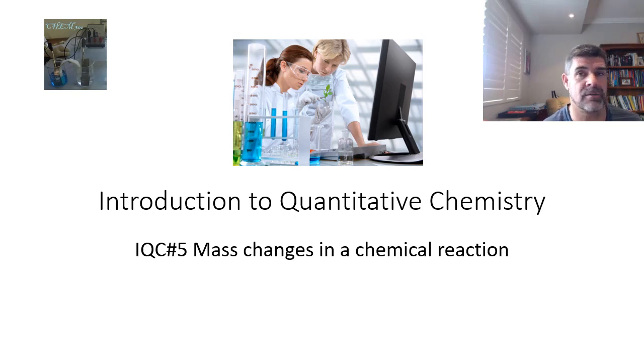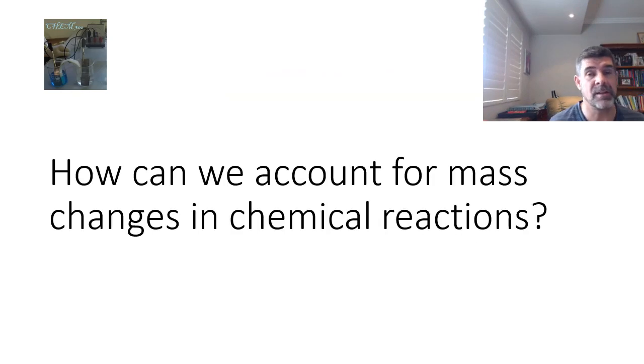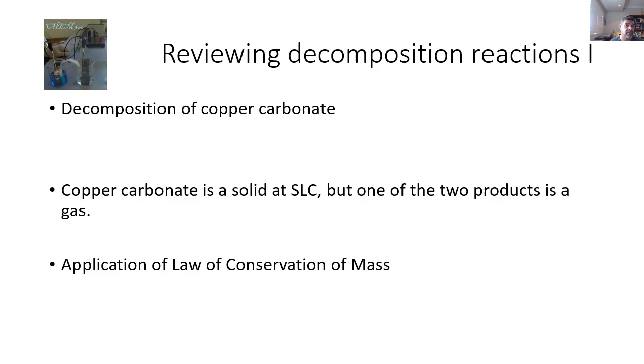This is really just a continuation from what we were looking at in the previous video. So the key question this time around is how can we account for mass changes in chemical reactions? Hopefully the answer will be fairly obvious, but let's have a look at some of the potential problems as we look at different types of chemical reactions.